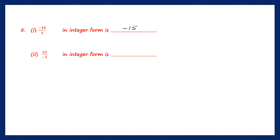Next one: 23 by minus 1. Since 23 has no sign, it's understood as plus. Plus into minus — when the signs are different, your quotient will be negative. 23 divided by 1 is 23, so the answer is minus 23, and this is in integer form.